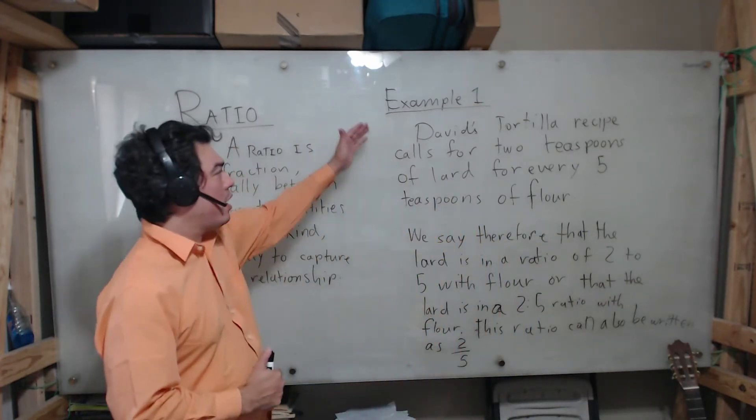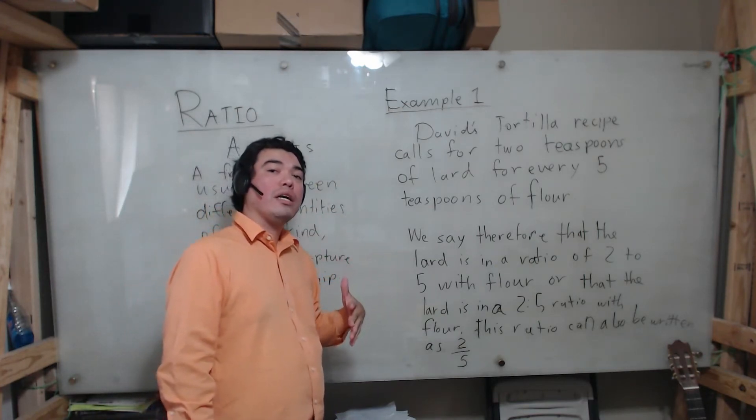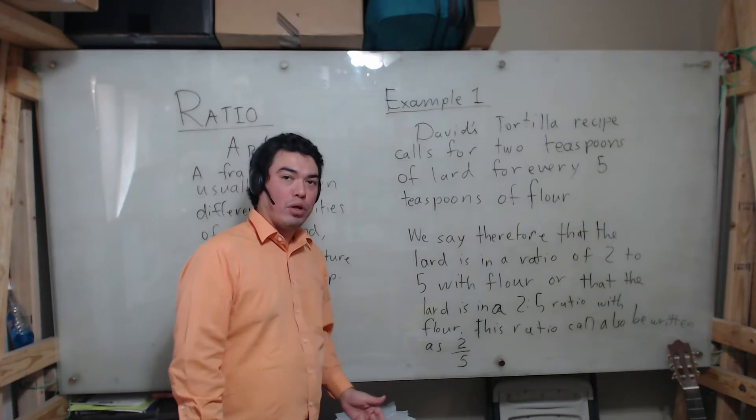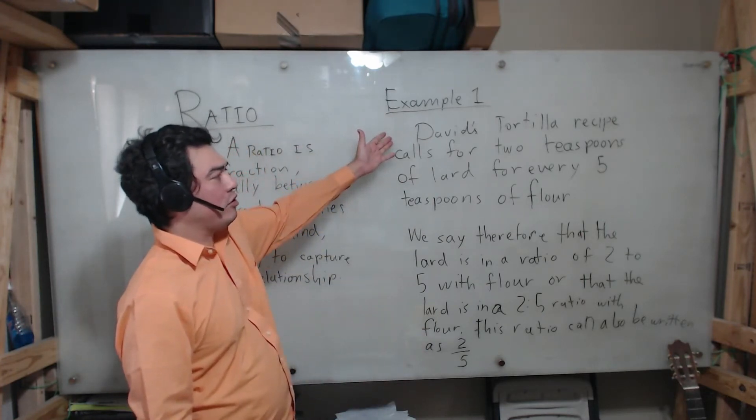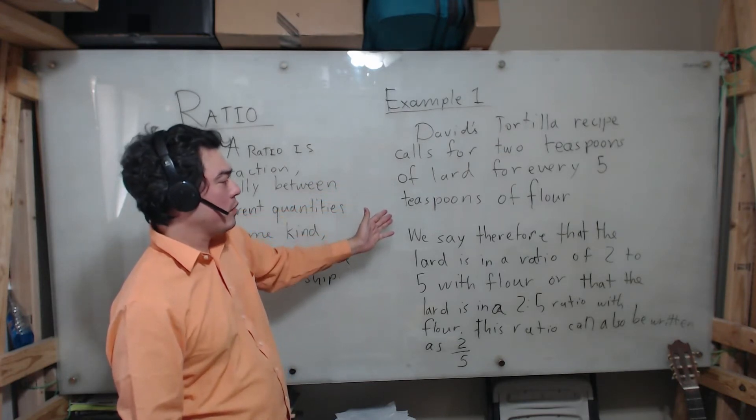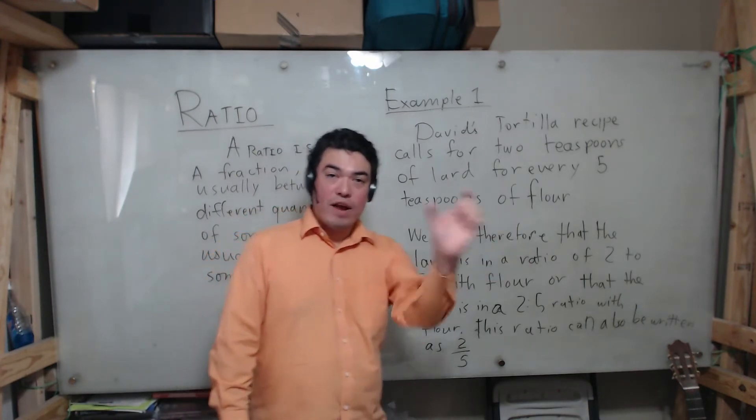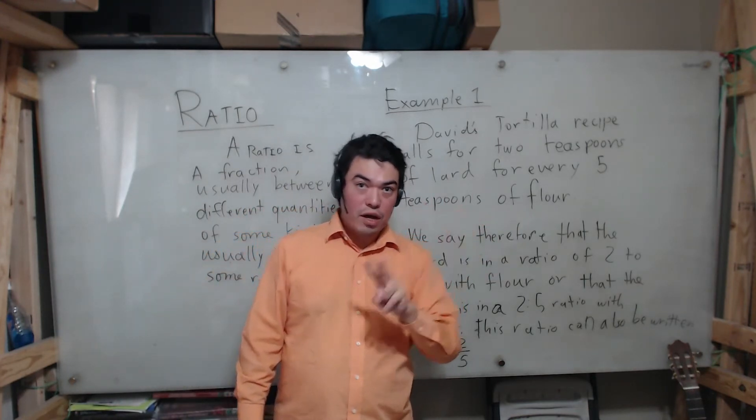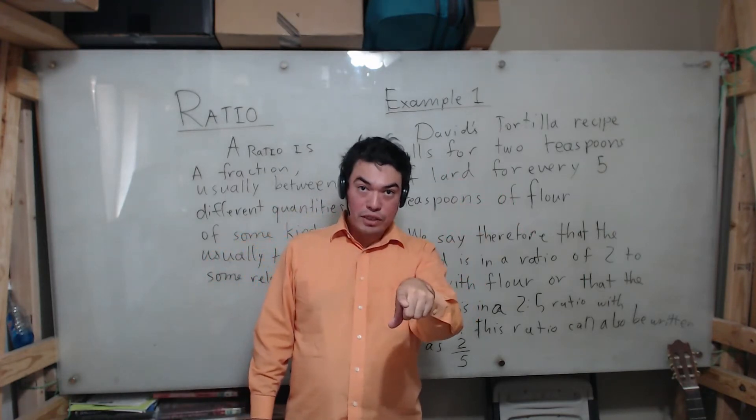This example captures David's tortilla recipe which calls for two teaspoons of lard for every five teaspoons of flour. Notice how there's a relationship here: for every two teaspoons of lard there are five teaspoons of flour. If you make this recipe you're probably not going to have good tortillas, but I just did this problem just for you guys. If you want a real tortilla recipe you can look at them online. So notice, for every two teaspoons of lard there's five teaspoons of flour.